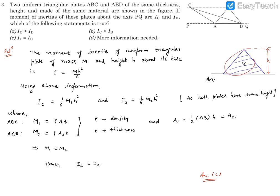So if we have any triangular plate with mass M, its height from the base is H, then about base axis, its moment of inertia comes out to be MH square by 6. This can be used as a standard result.